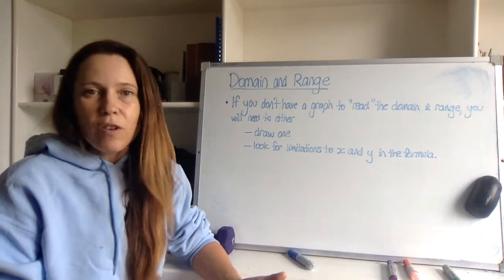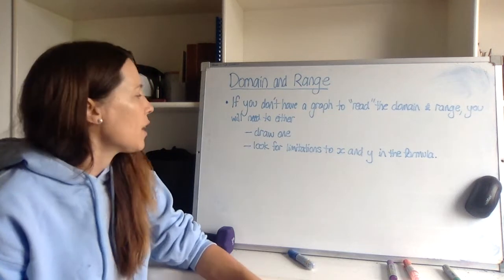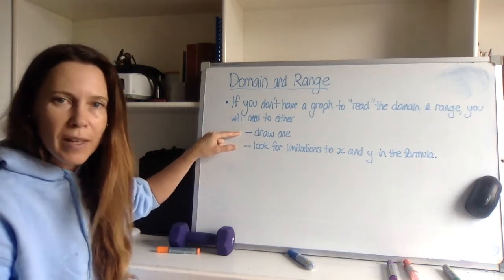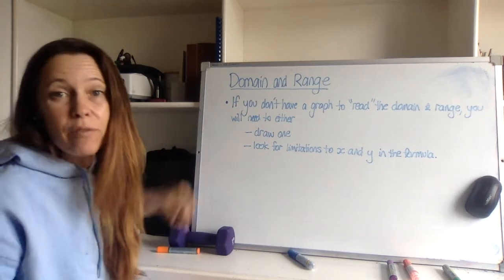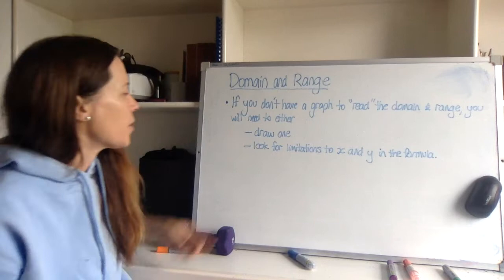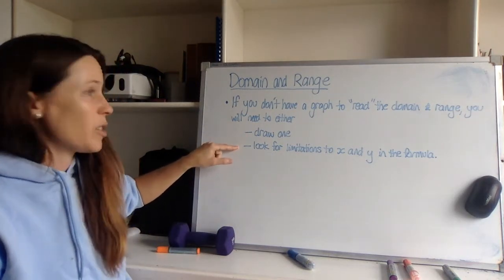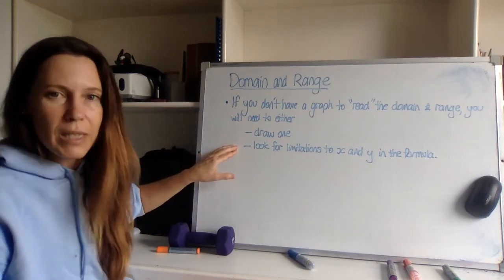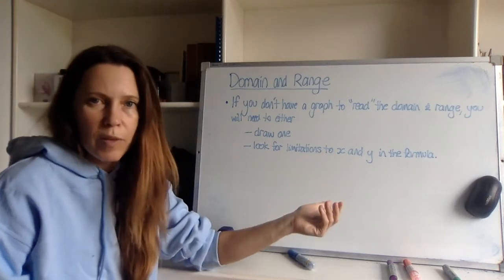Now what do you do if you don't have a graph drawn and you can't just read the domain and range straight off your graph? Well you've got two choices: you can either draw one. Now you might be nervous about that because you might think you're not very good at drawing many graphs. We're going to get really good at drawing graphs in this course. The other thing that you can do, often it's a good idea anyway before you've even started to draw your graph, is you'll look for limitations to x and y that are actually in the formula.